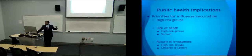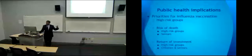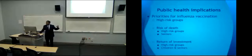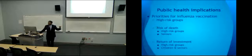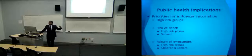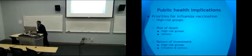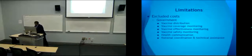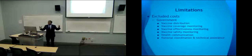With respect to priority when vaccine supplies are limited: if you only look at epidemiological impact — risk of death — prioritize high-risk groups followed by seniors. But if you account for both epidemiological and economic impact, prioritize high-risk groups followed by children and seniors.